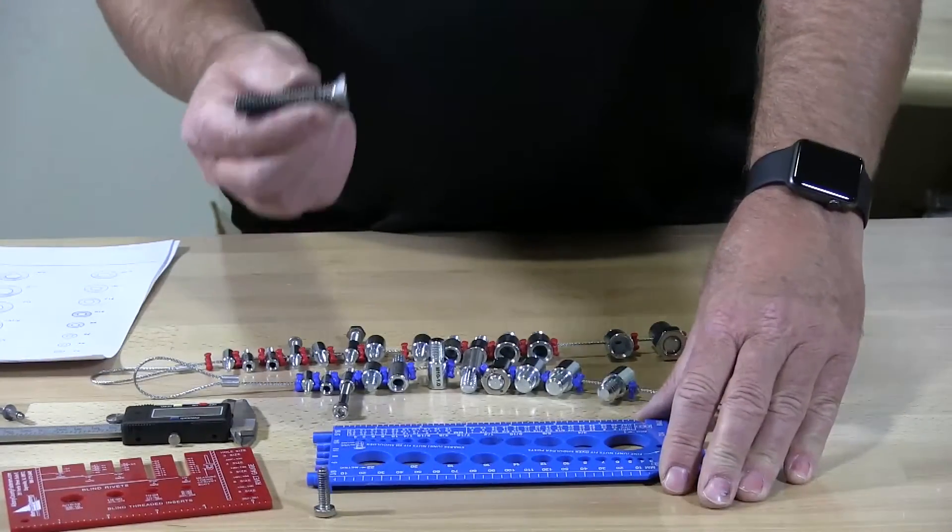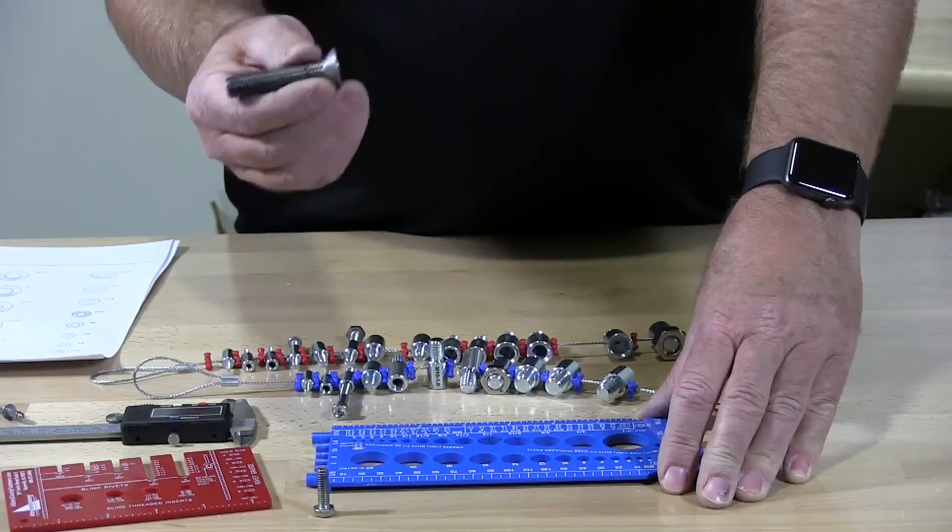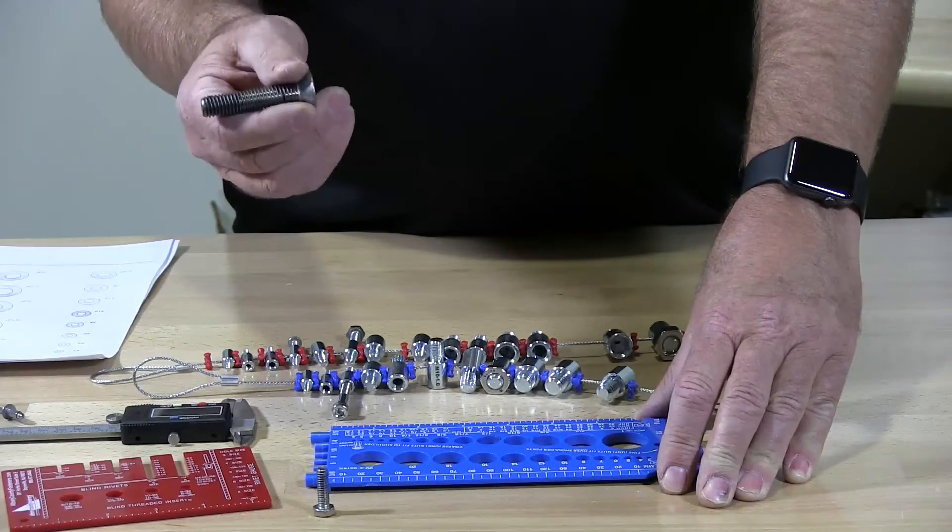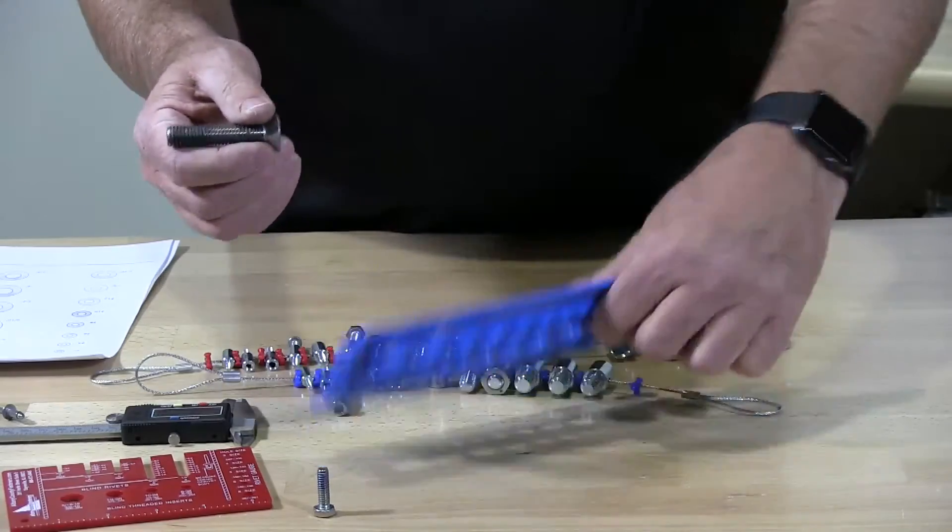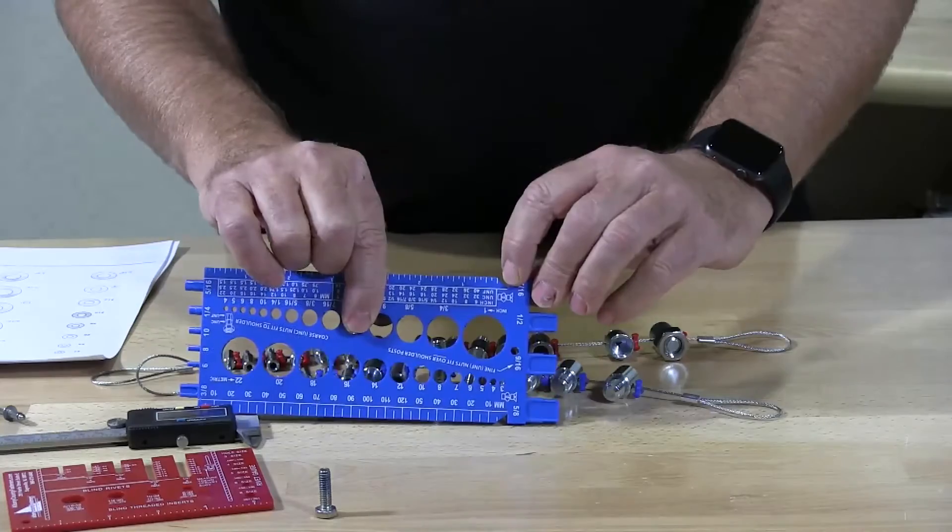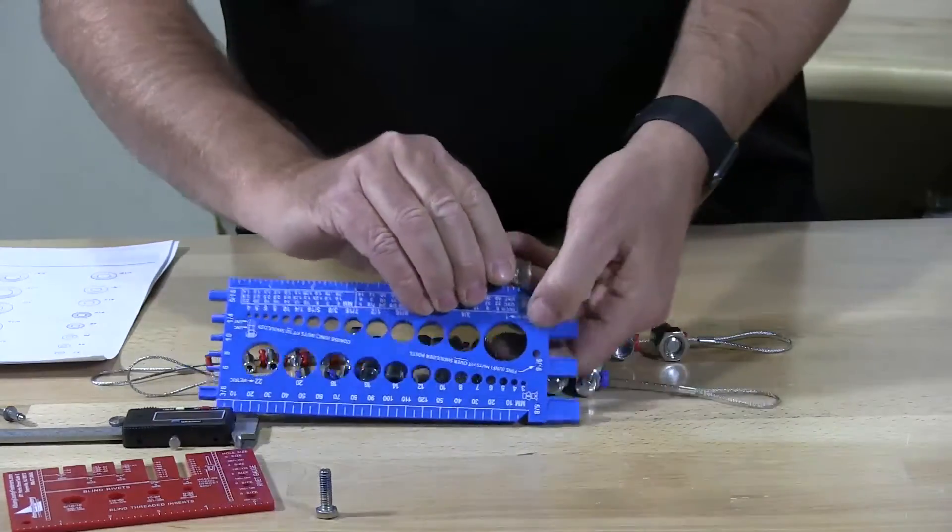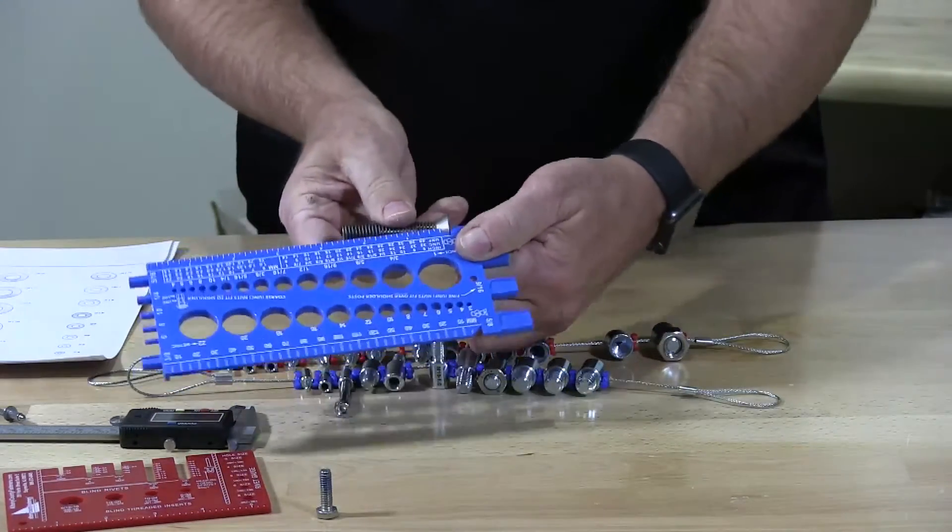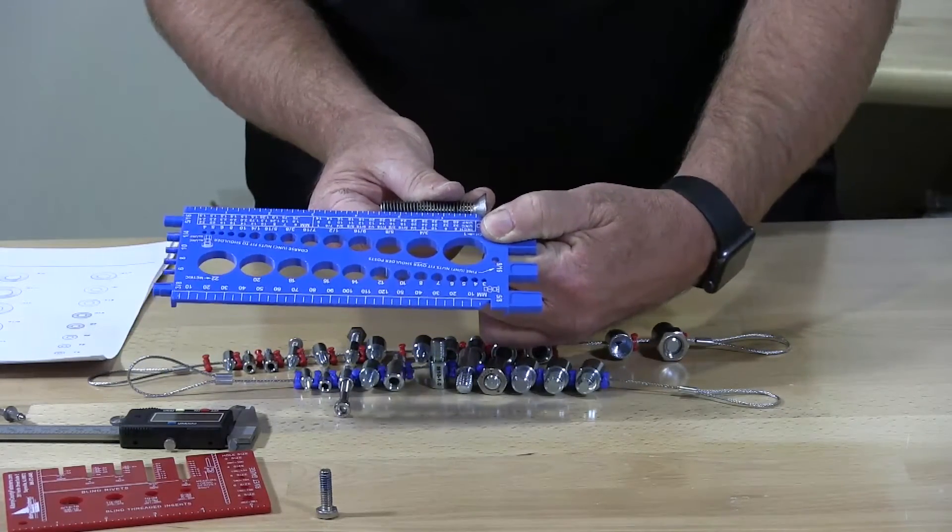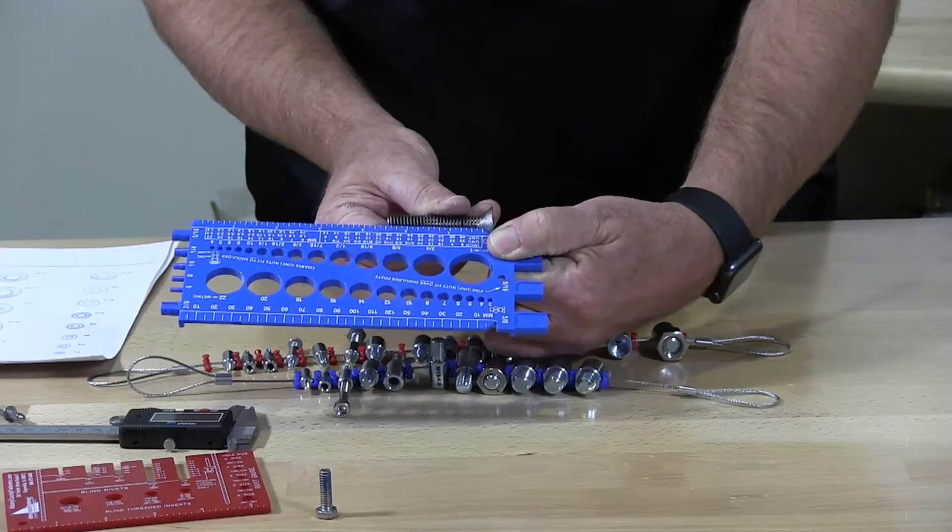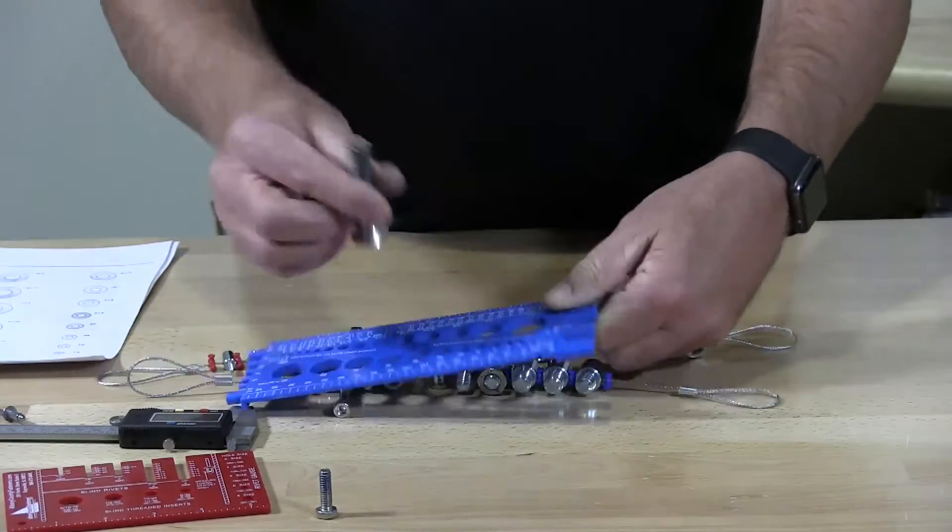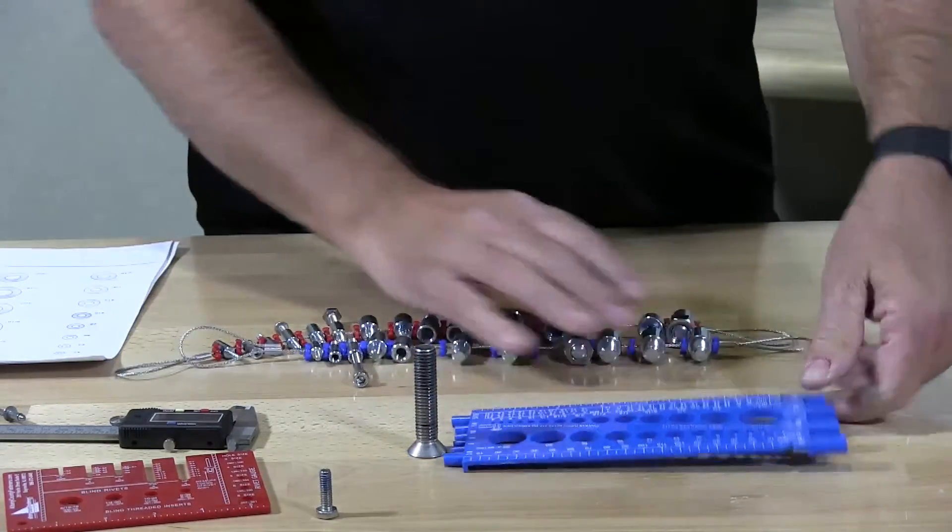When you're measuring a flat head socket cap, a flat head sheet metal screw, or a flat head wood screw, or a deck screw, this notch right here, that is made so you can get the length. And the length of this, which includes the head, would be two and a half inches long. And that's how you measure that with that gauge.